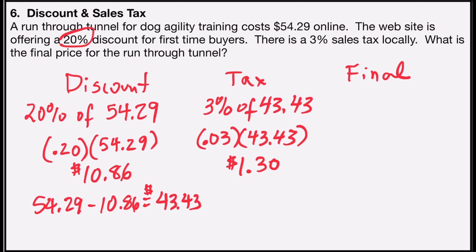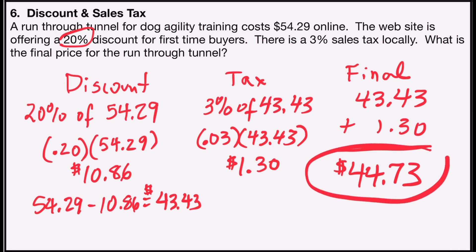So to find my final price, I will take the discounted price of $43.43 and add the sales tax amount, which is $1.30. If I add those two together on a calculator, I would find that the price would pay $44.73 for the dog agility tunnel run-through.